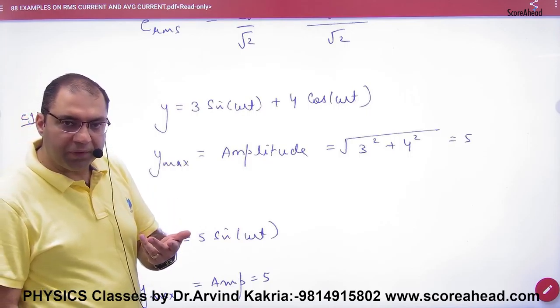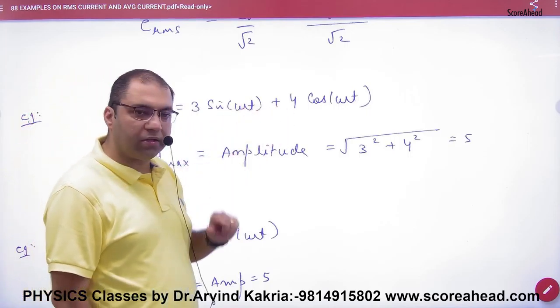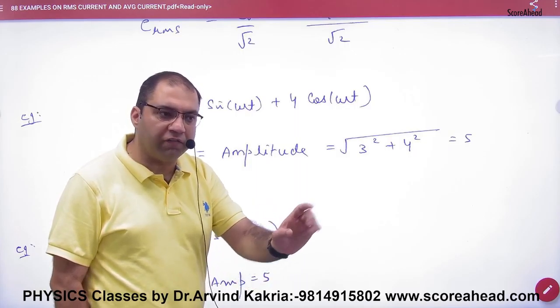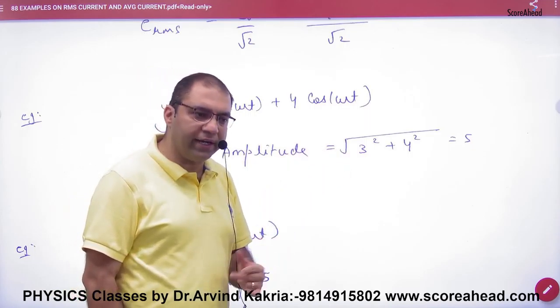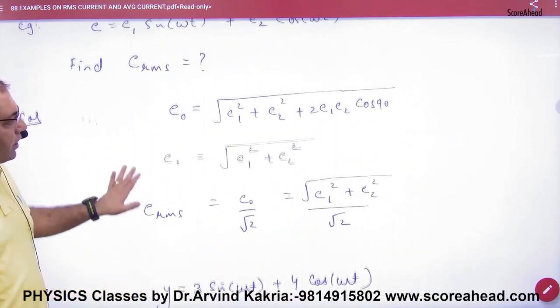It's displacement under root of 3 square, 4 square plus 2 into 3 into 4 into cos of 90. Cos of 90 is 0. So what would the answer be? 3 or 4 resultant? 5. Same method, EMF will be removed.